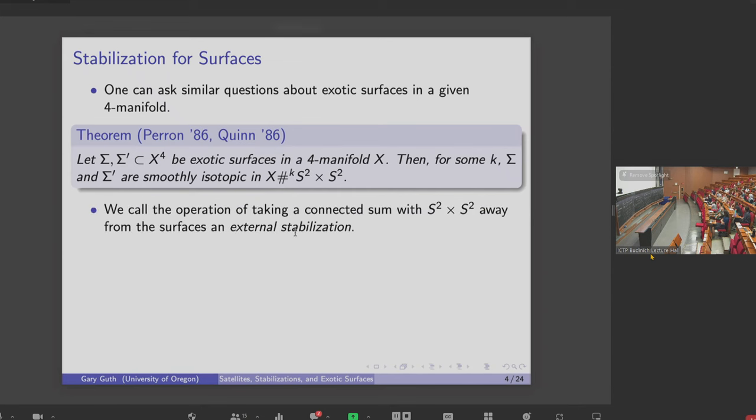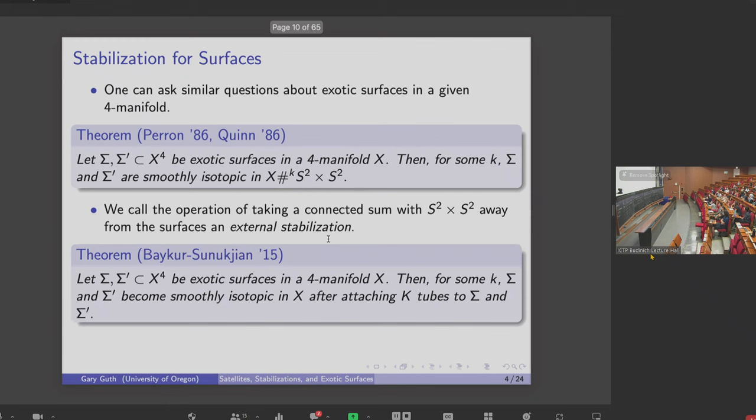And this operation where we change the ambient four manifold is called an external stabilization. Alternatively, I could modify the surfaces themselves in some way. So here the statement is, again, if I've got some exotic surfaces,